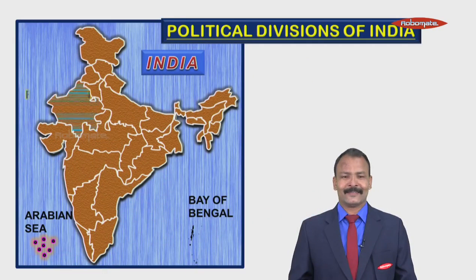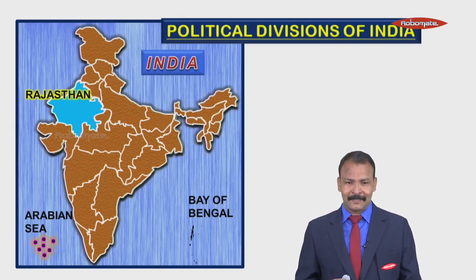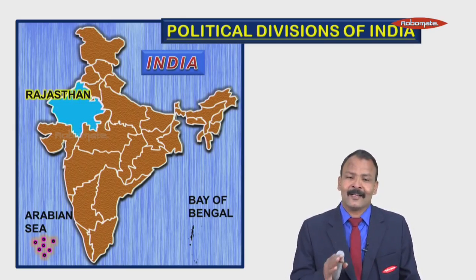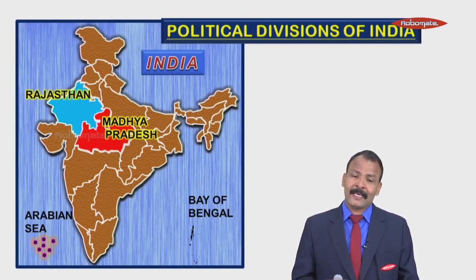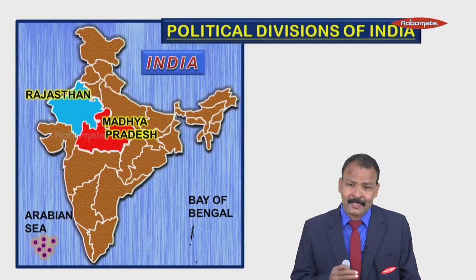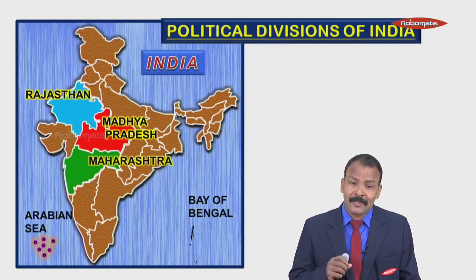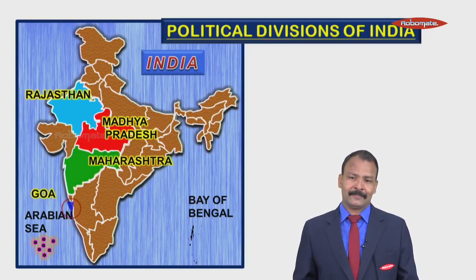The largest state of the country is Rajasthan, followed by Madhya Pradesh, then Maharashtra. The smallest state in our country is Goa.